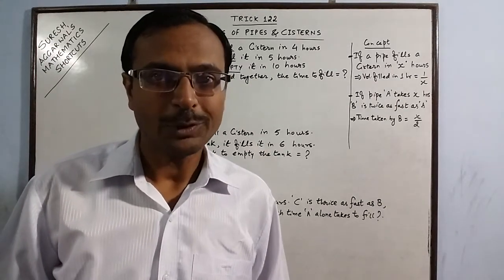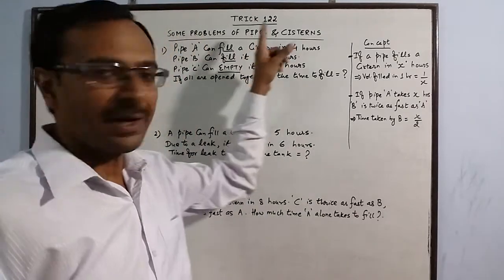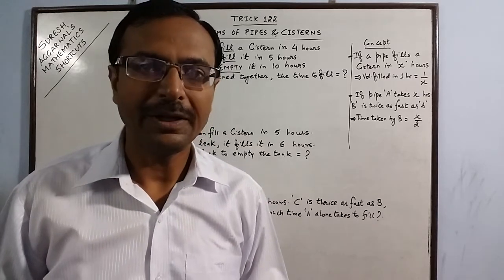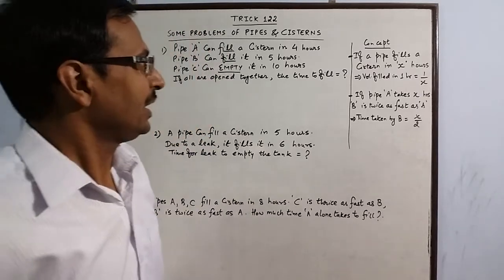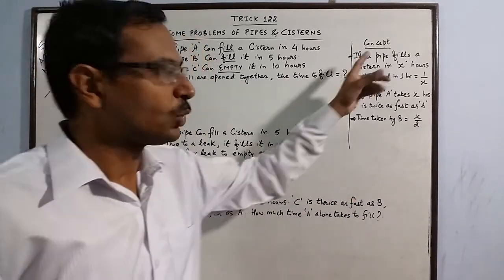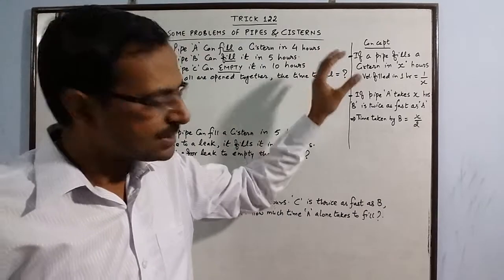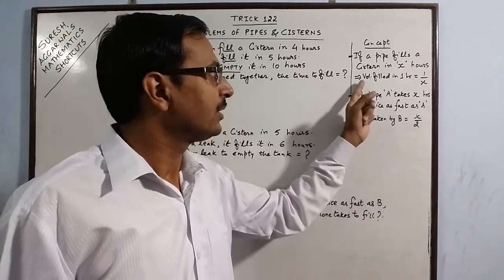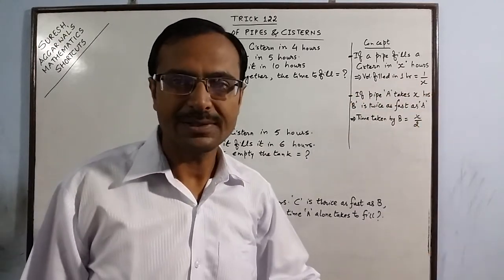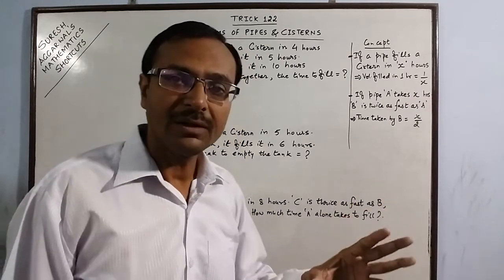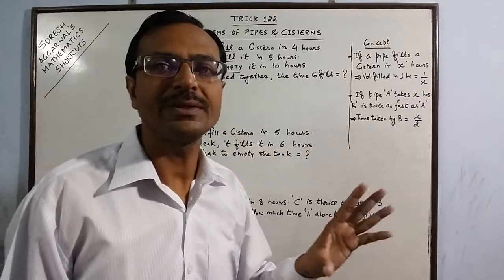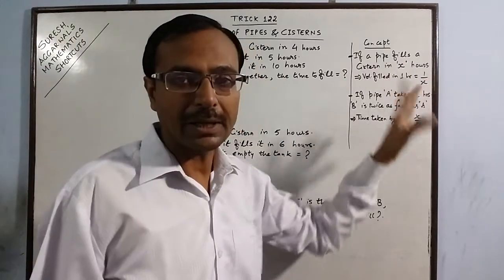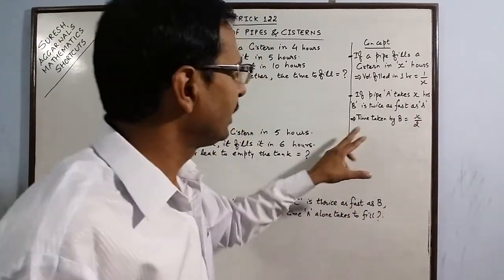Hello everyone. A very important topic today: pipes and systems — a very common topic in all numerical ability and aptitude tests. To understand this concept, you need to remember two points. First, if a pipe fills a system in X hours, then the volume filled in one hour is 1/X. For example, if a pipe fills a system in seven hours, then one-seventh of the system is filled in one hour. Take the reciprocal of the total time to get the work done in one hour.